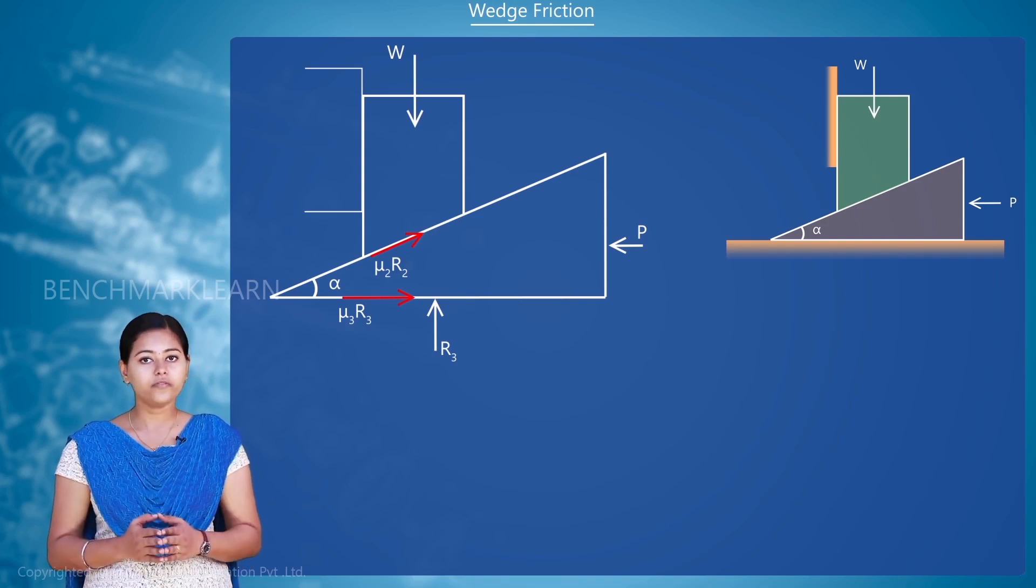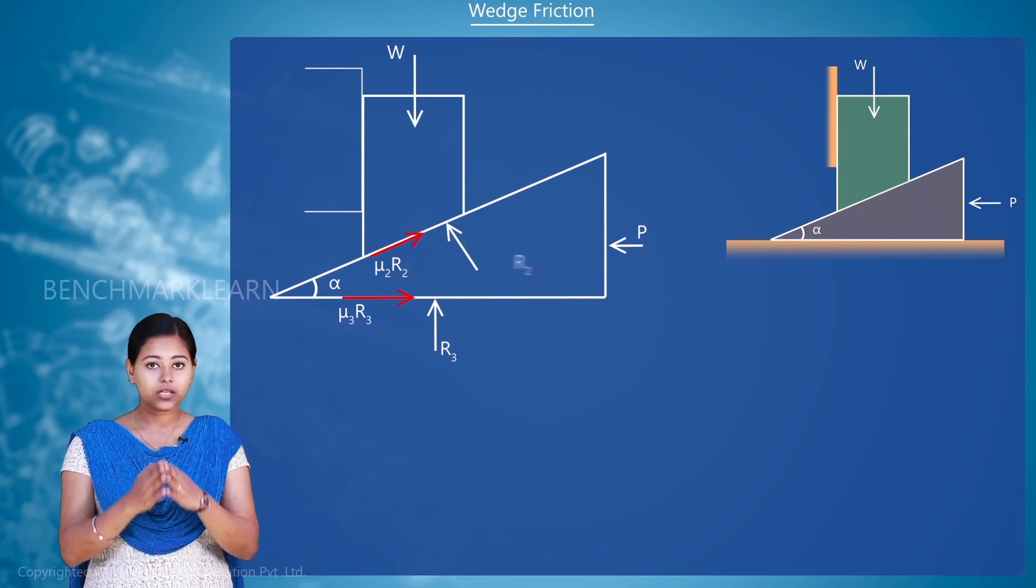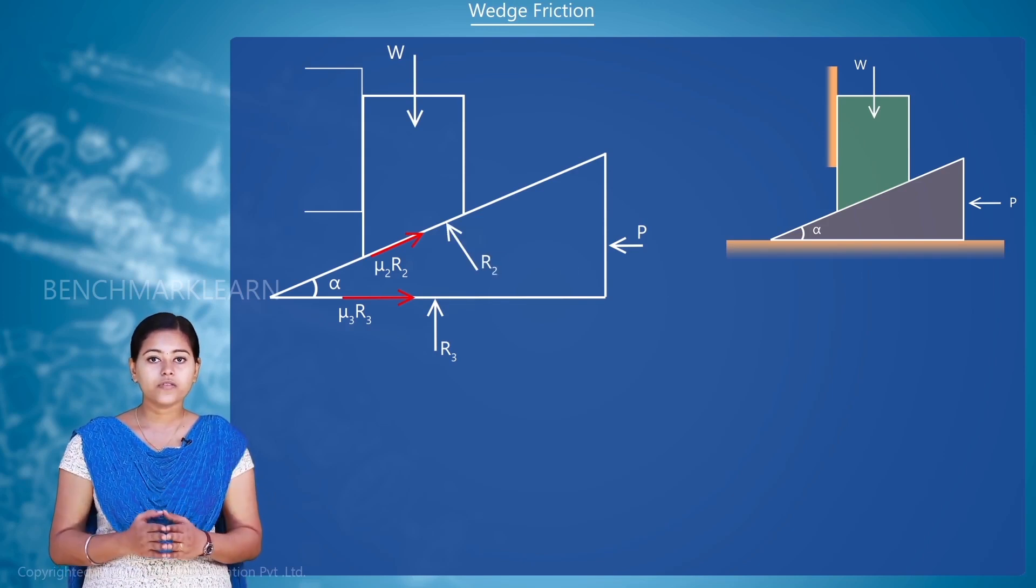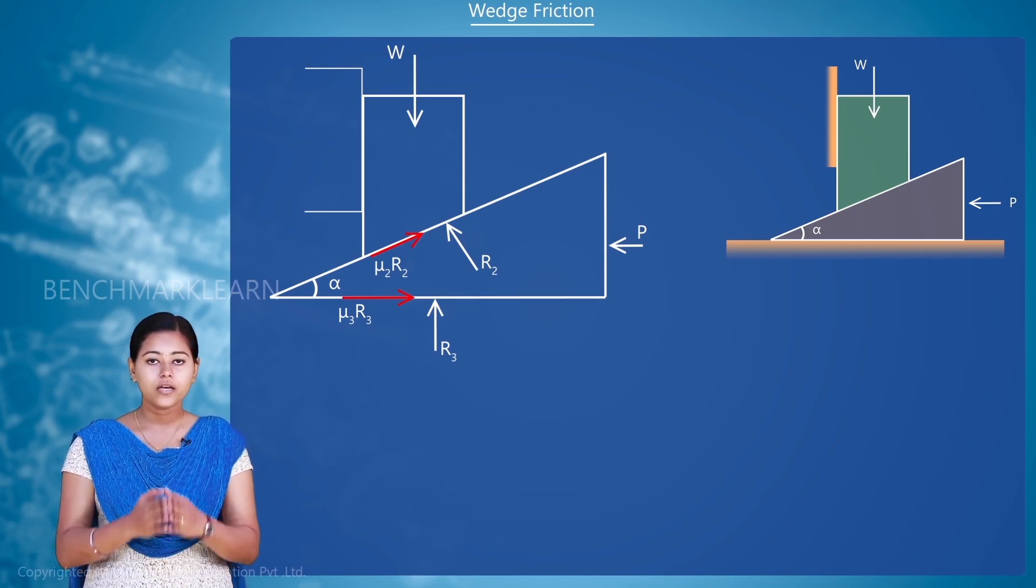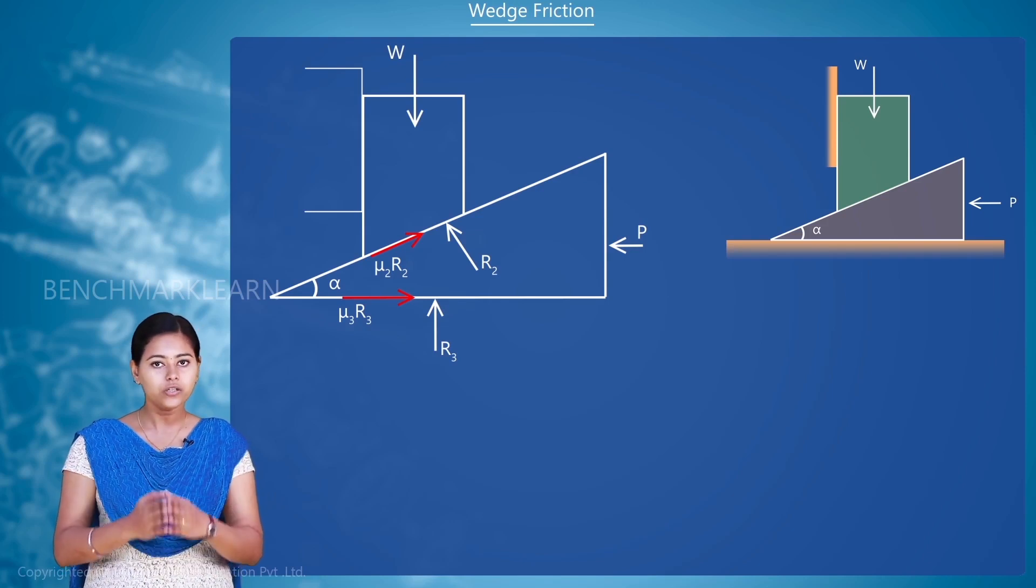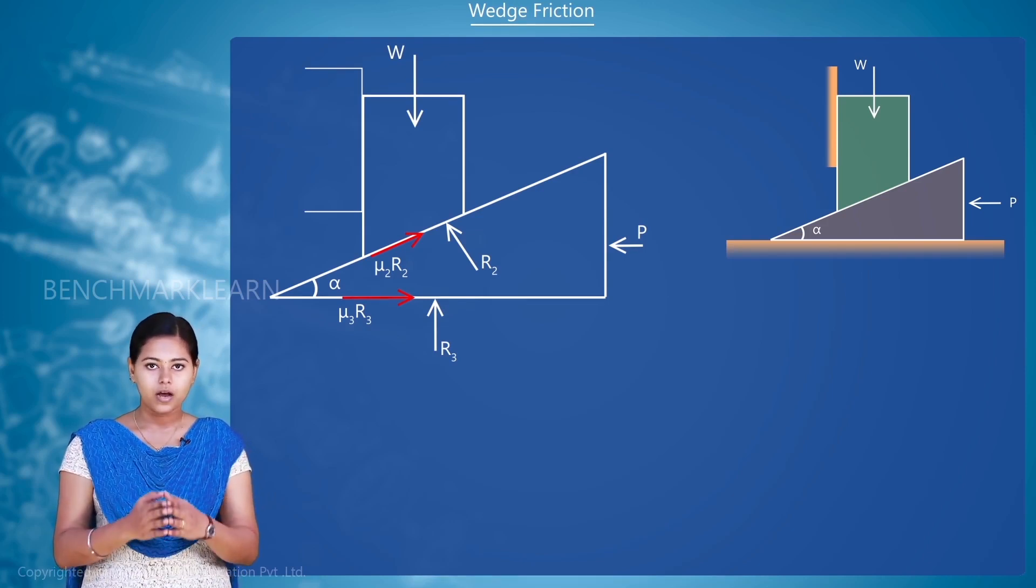Due to the weight of the lifted body, a reaction R2 is acting on the wedge. Because of the sliding up of the weight, a frictional force mu2R2 will be acting opposite to the direction of motion.